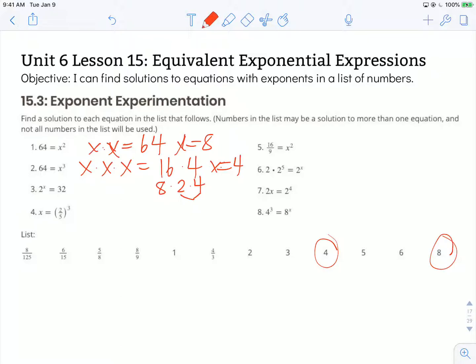The next one says 2 to the x power equals 32, so I need 2 times itself some number of times to get 32. So I'm just going to start with 2 times 2, which is 4, times 2 again is 8, times 2 again is 16, times 2 again is 32.